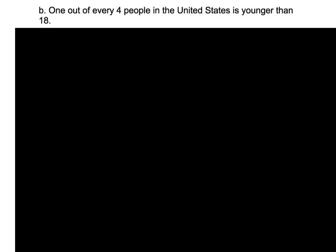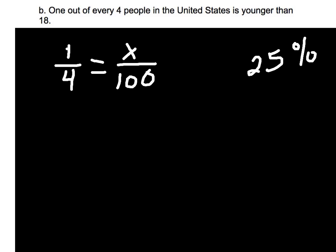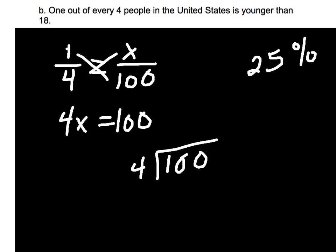Let's look at another example. One out of every four people in the United States is younger than 18. So again, the first thing we want to do is write this in the form of a fraction. One fourth. Now, for this particular problem, you may just automatically realize one fourth is just 25%. But just so we can prove it mathematically, I'll go ahead and put it in the percent proportion. Cross multiply. One times 100 is 100. Four times x is 4x. I'm going to divide 100 by 4. And there I've shown through the math that it is actually 25%.